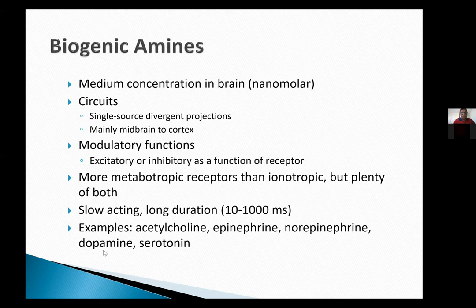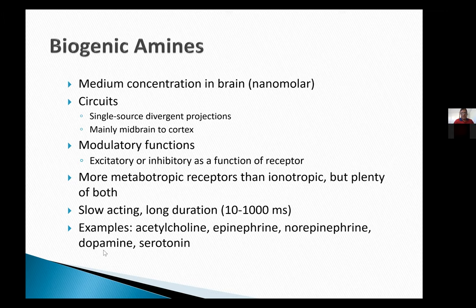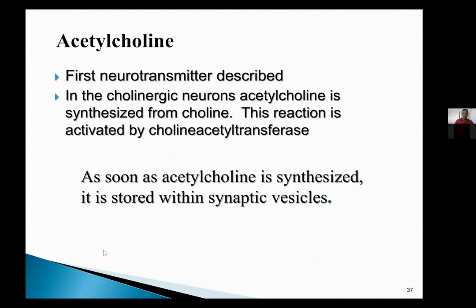Let's move on to biogenic amines — dopamine, serotonin, and norepinephrine. Examples of biogenic amines include acetylcholine, epinephrine, norepinephrine, dopamine, and serotonin. There is a distinction: epinephrine, norepinephrine, and dopamine are called catecholamines, but serotonin is not a catecholamine — it is an indolamine. Acetylcholine was actually the first neurotransmitter ever described, and it is synthesized from choline by the enzyme choline acetyltransferase.